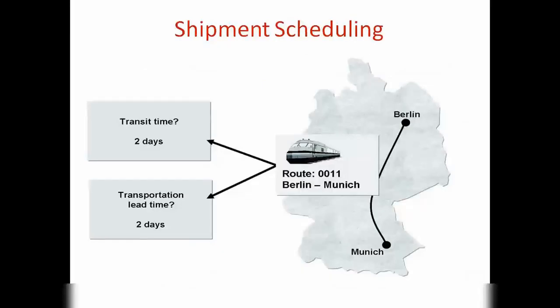Now, what is shipment scheduling? If we are sending goods from our plant — say from Melbourne to the US, Australia to US — there is a thing called transit time. Whether you're sending goods via air, via ship, or via road, transit time is the time taken for the goods to reach the customer. We need to consider transit time as well when calculating all the shipment scheduling.